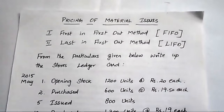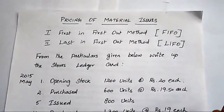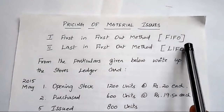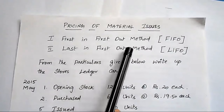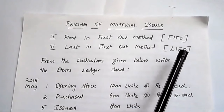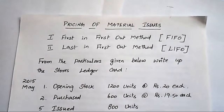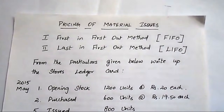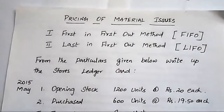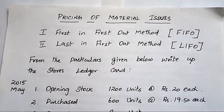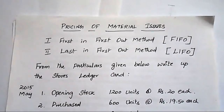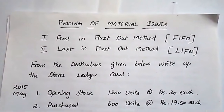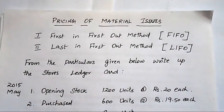In this video, I am going to explain two very important methods. The first is the FIFO method — First In, First Out. It is a very simple concept. Whenever the storekeeper receives units from a supplier, he records them immediately in the store's ledger, recording both receipts and issues to the production department.